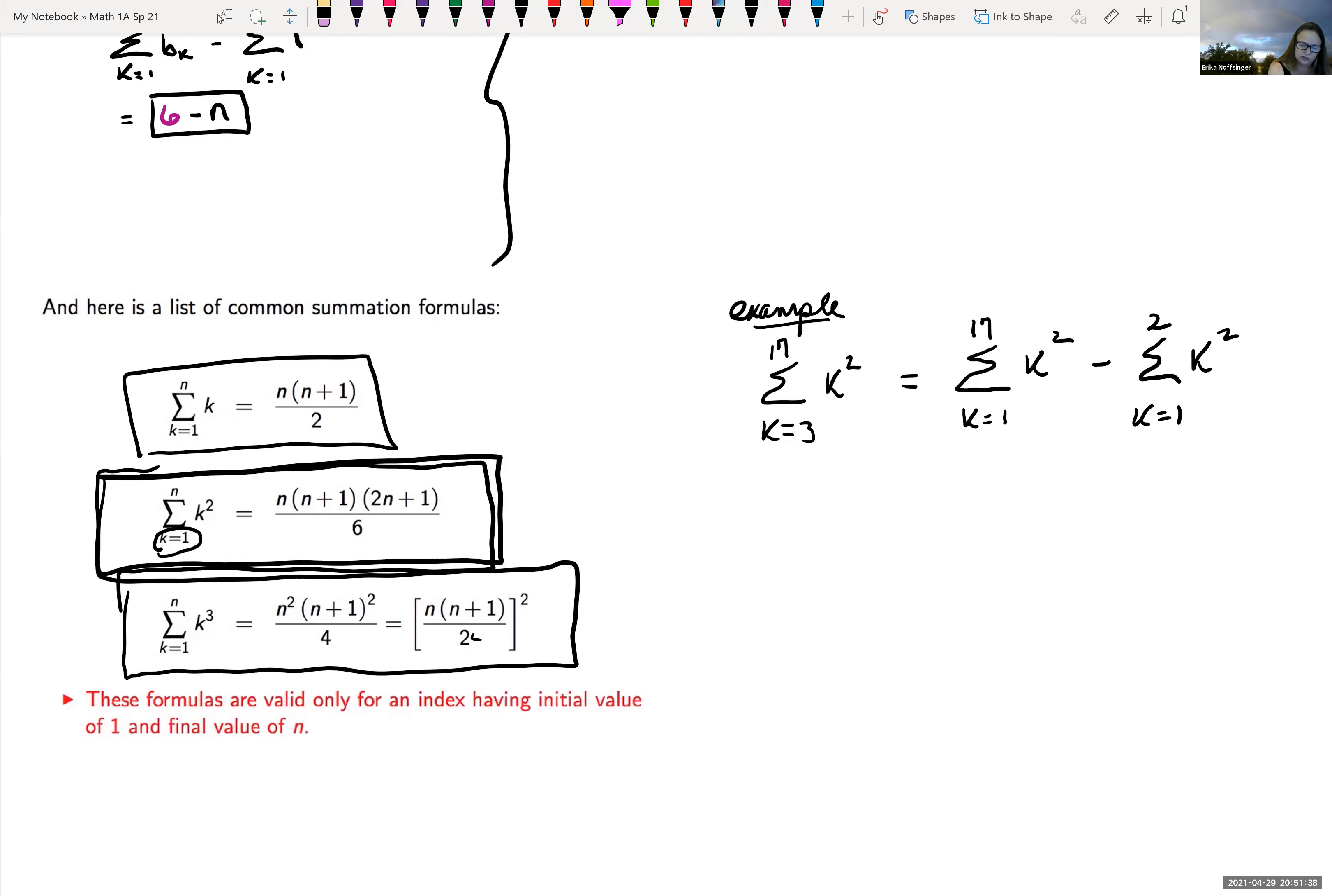So now we can use this rule. So our N value in our case, N is equal to 17. For the first summation. And so I can do this rule. It says take N, which is 17. Times 17 plus one, which gives me 18. All times two times 17 plus one. So two times 17 is 34 and 34 plus one is 35. All divided by six minus.